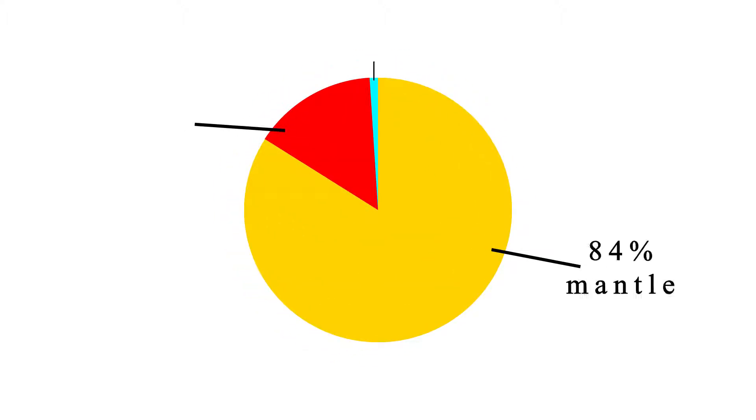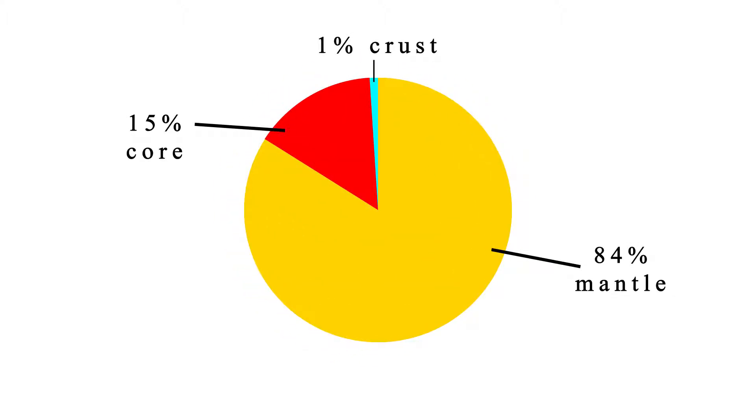This is the composition of the Earth. It consists of 1% crust, 84% mantle, and 15% core.